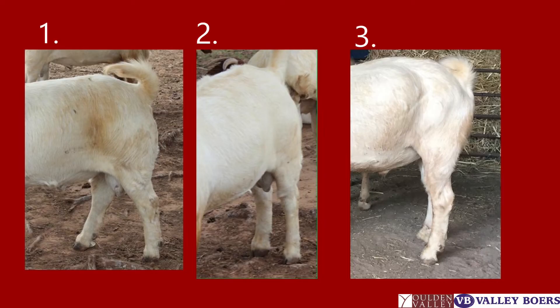The first two examples are at a different picture angle, but you can see good length of muscle, where the third animal cuts in earlier and lacks depth and width.